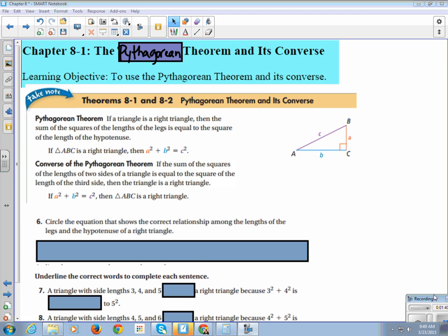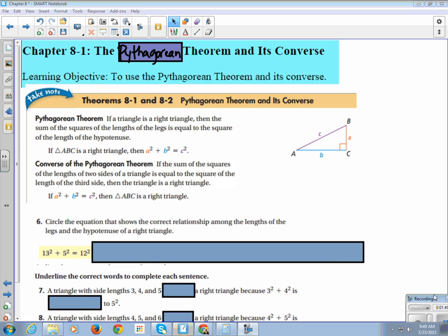The equation that shows the correct relationships among the lengths of the legs and the hypotenuse of a right triangle is not this one. What's wrong with this first statement here? 13 squared plus 5 squared equals 12 squared. What do you think, Zach?